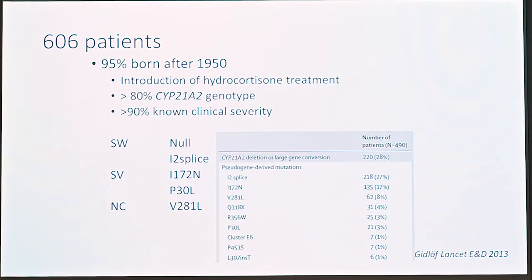Since 1950 patients have had a possibility to survive, though not all have. In Sweden we have had screening since 1986, and Anna Wedell at Karolinska put a lot of time and effort into characterizing these mutations. So we have a situation where most patients in the Swedish population with CAH also have their genotype known.